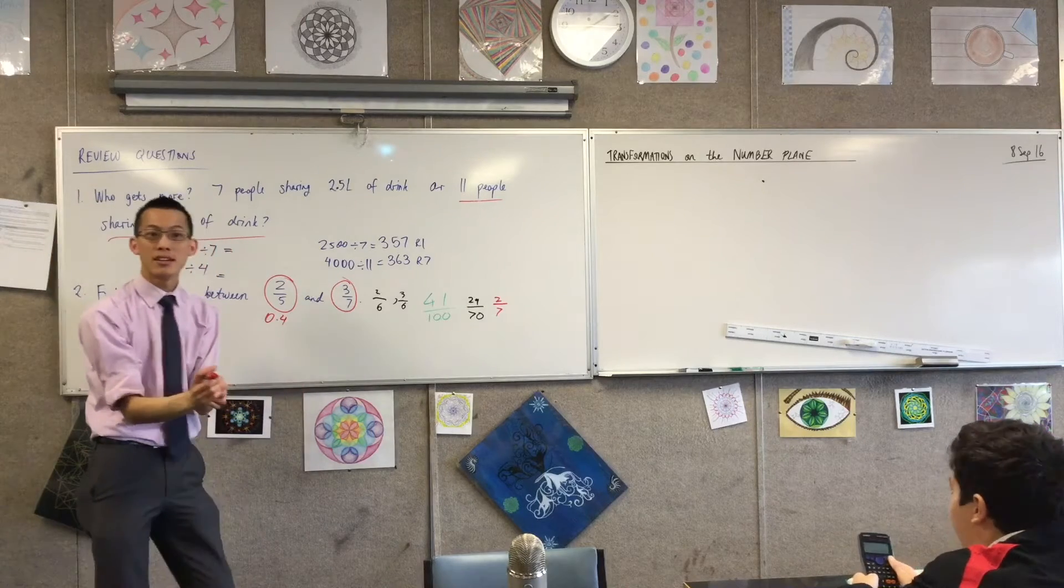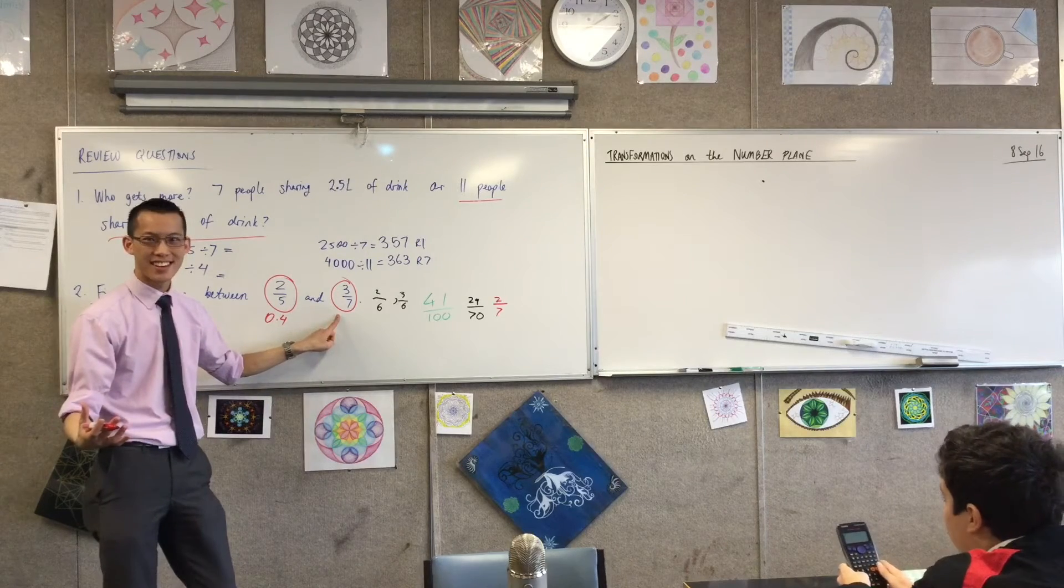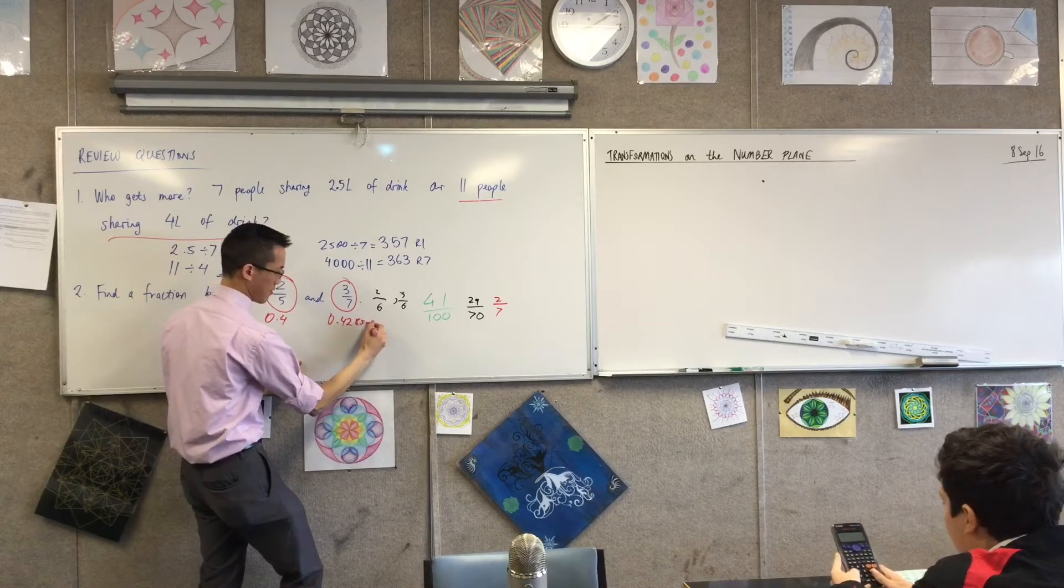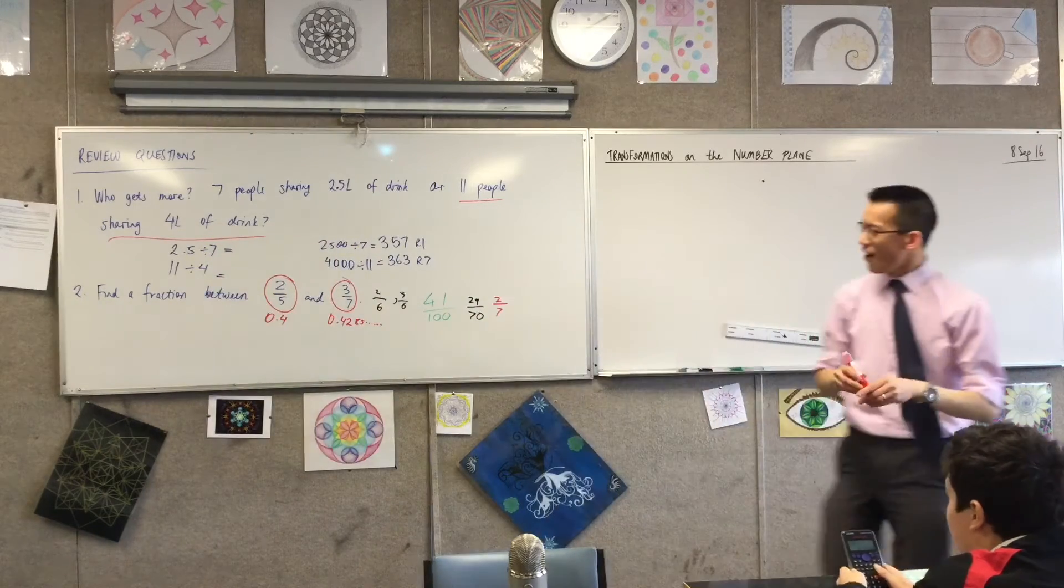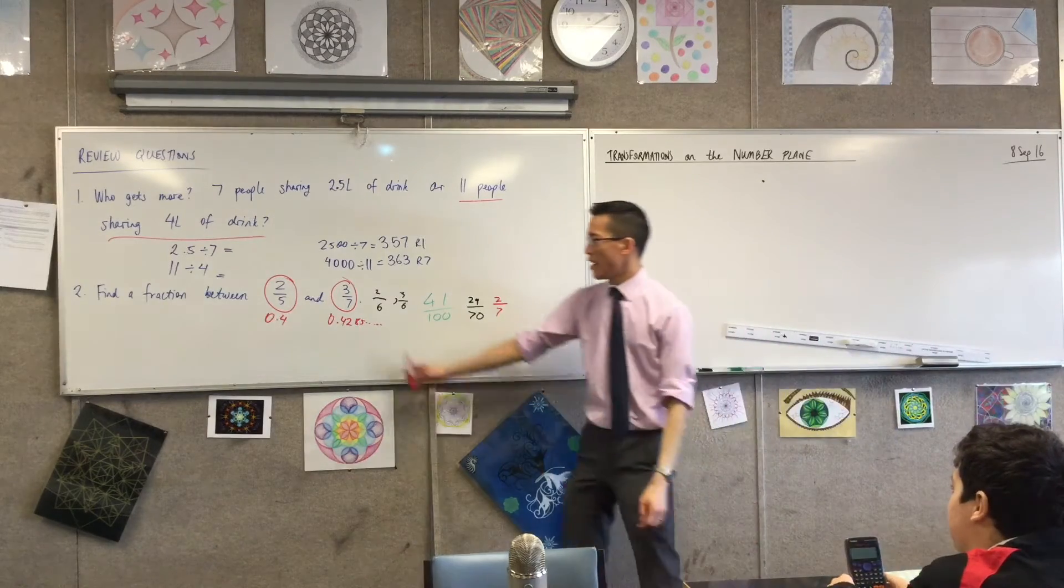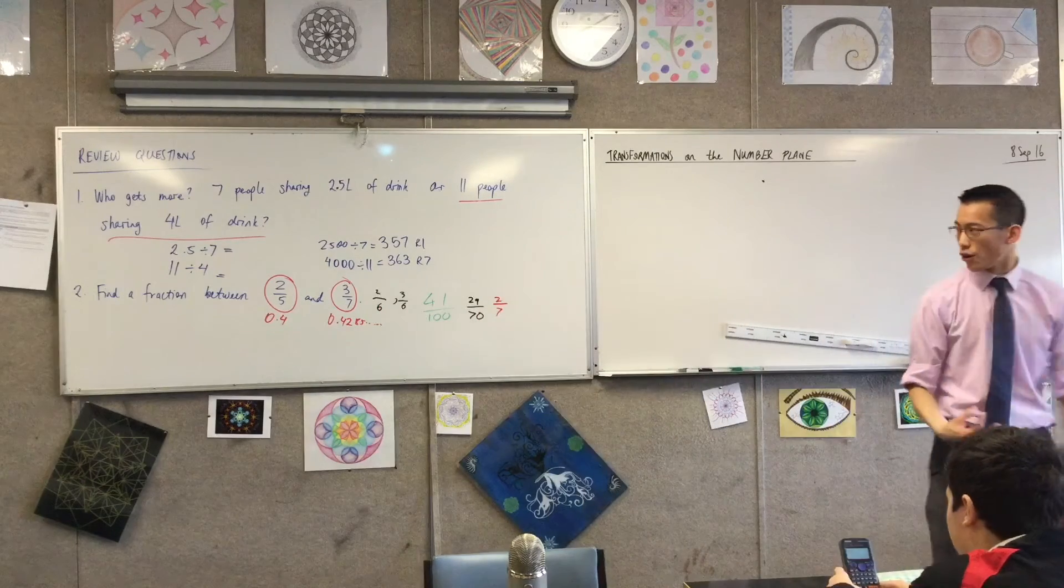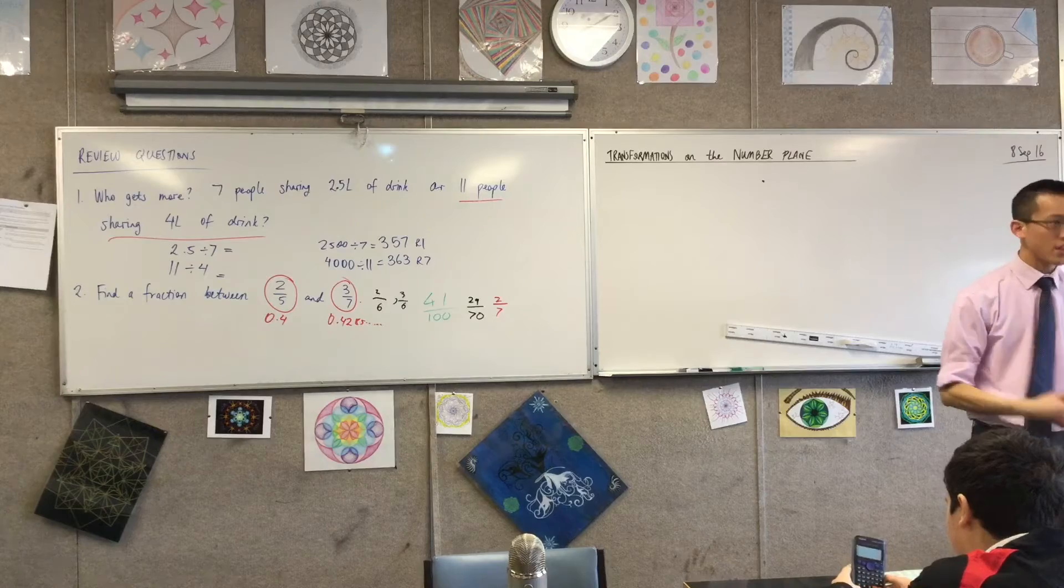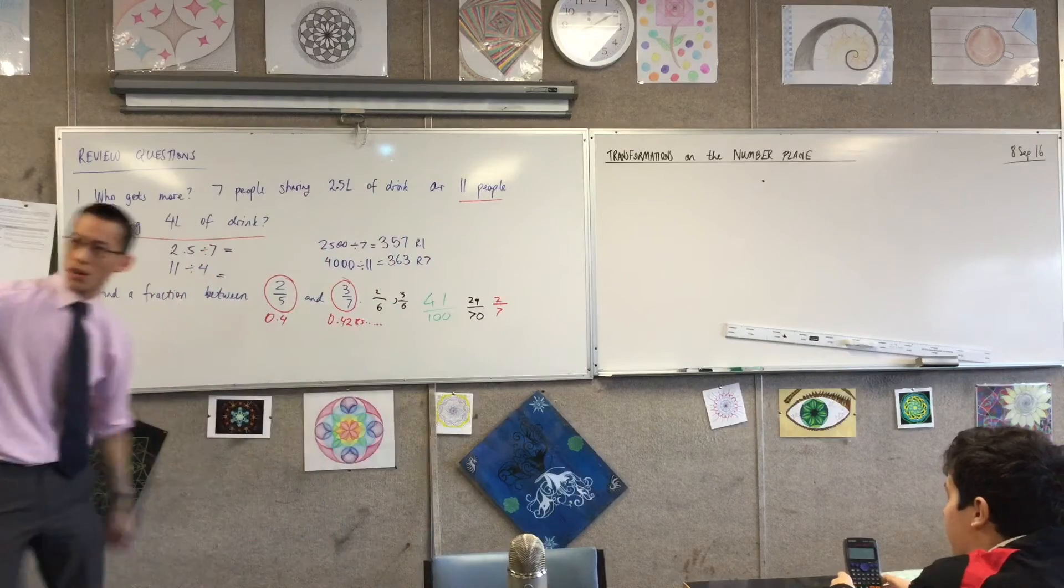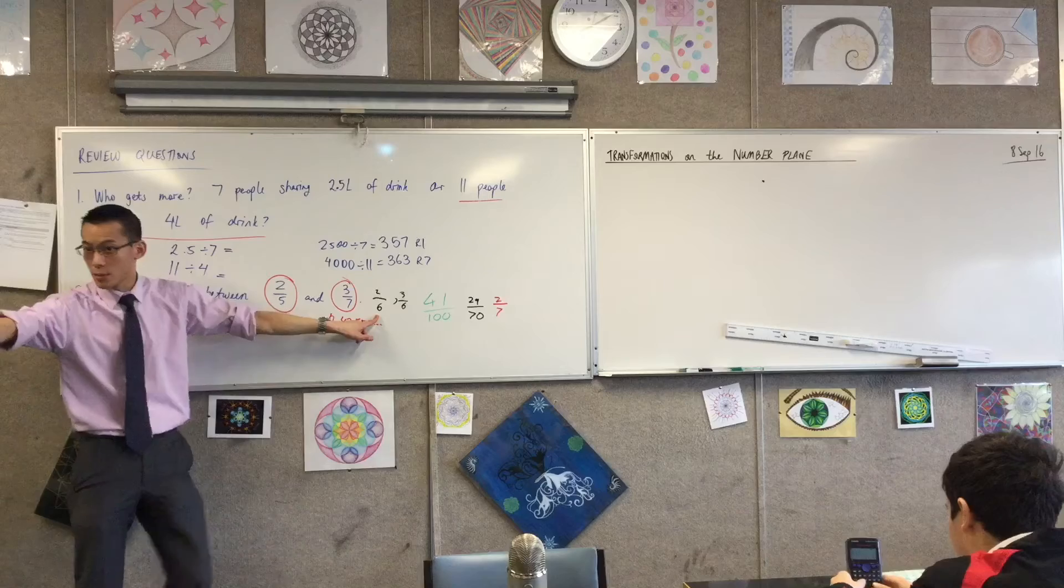Can someone tell me what 3 over 7 is as a decimal? Okay, good, good, thank you. So now I need some help. I've got 1, 2, 3, 4, 5 answers, and I need to know which ones actually fit and which ones do not. So let's have a look at each of them. Can I get you 5 from Jaren all the way to Charlie? Can you test this one? Find out what it is as a decimal.